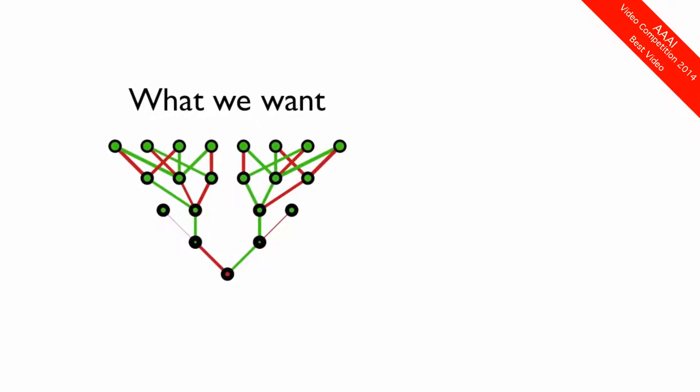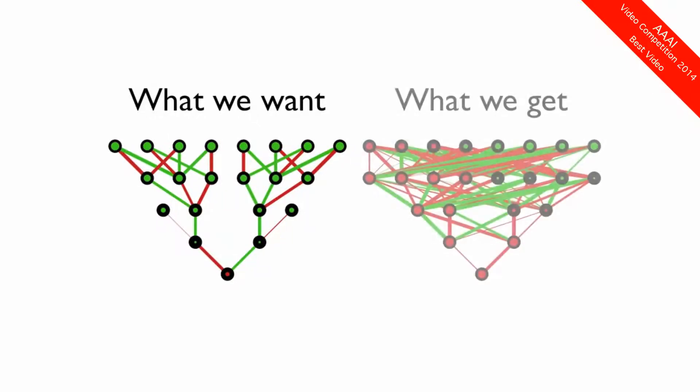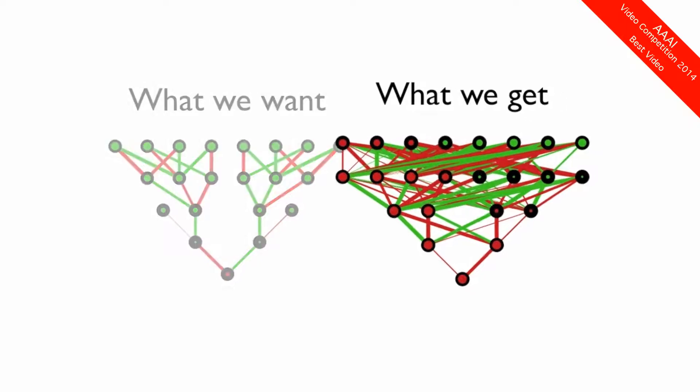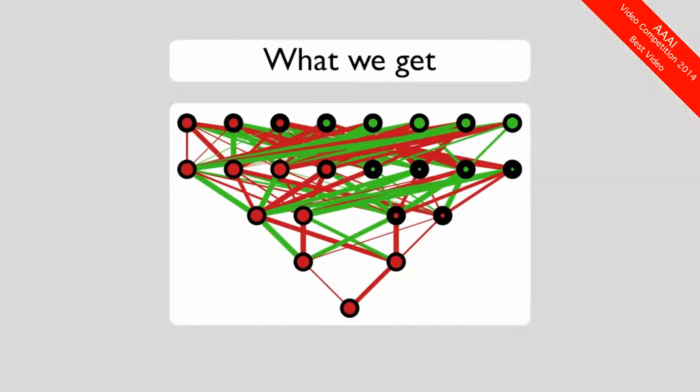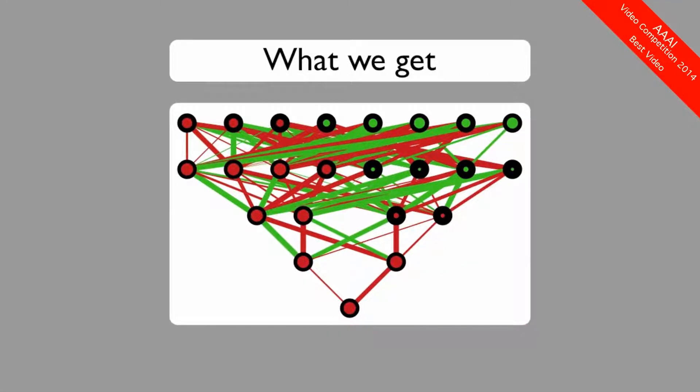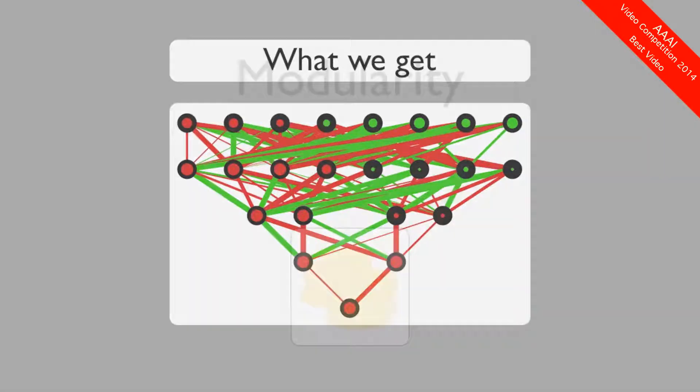However, despite the advantages of modularity and regularity, networks evolved with traditional evolutionary algorithms are often irregular and entangled, meaning that we have to use some special techniques to encourage modularity and regularity to evolve.